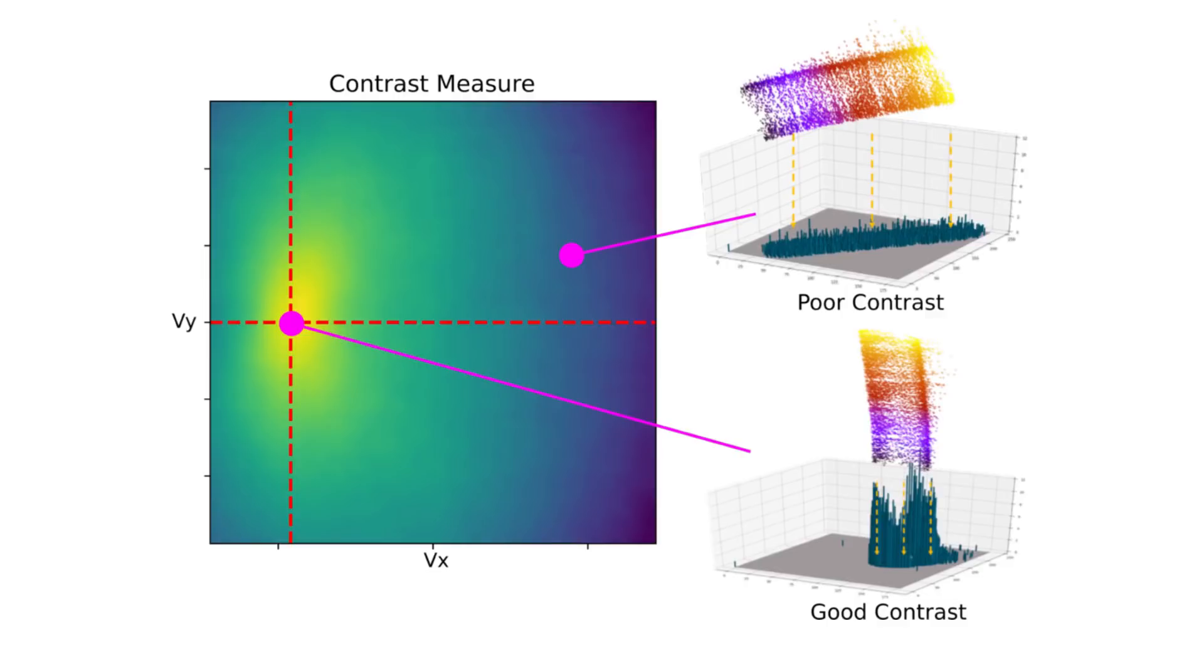We can measure this sharpness by looking at the contrast of the image. Since the function of contrast with respect to motion parameters is well behaved, we can optimize the function to find the motion parameters.